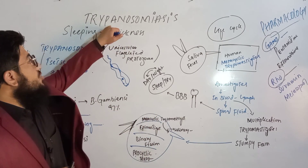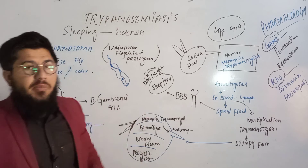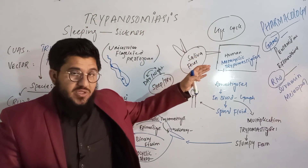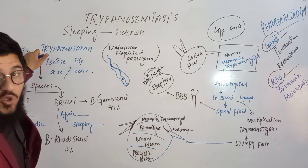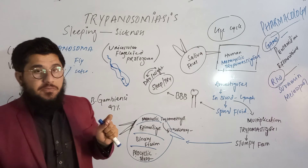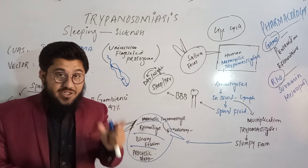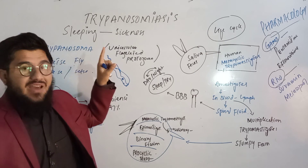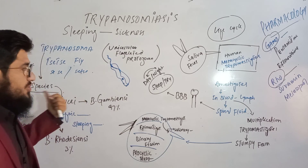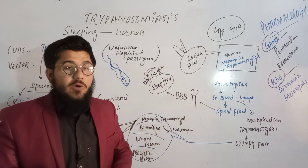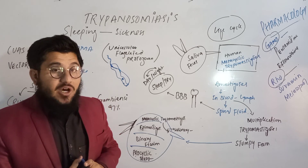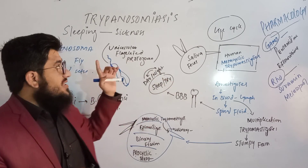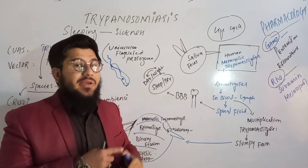The topic under discussion today is trypanosomiasis. First, I'll tell you what trypanosomiasis is, then the cause of trypanosomiasis, then we'll talk about the vector and what the vector term means. After that, we'll cover the species of the causative agent, then the life cycle of the trypanosoma causing trypanosomiasis, and finally the pharmacology — the drugs used to treat trypanosomiasis.